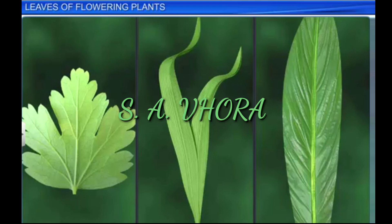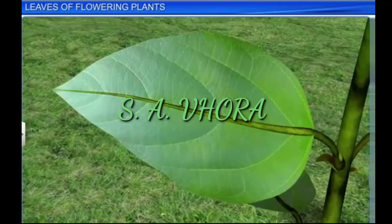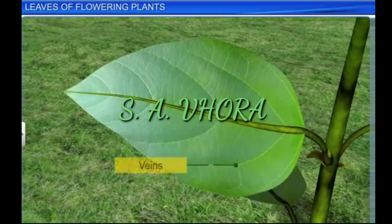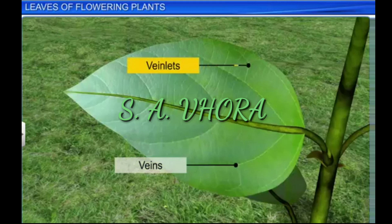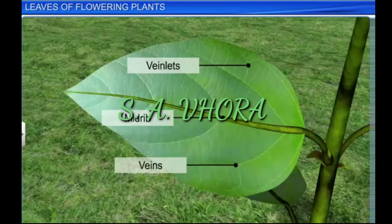The lamina is the expanded, flat component of the leaf which contains the chloroplasts. The lamina also has many veins and veinlets included. Usually, the lamina has a prominent vein running into its midrib. Leaf venation is the arrangement of veins in the lamina of the leaf.